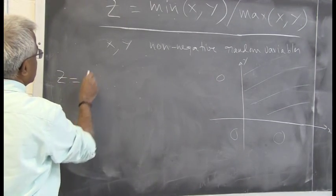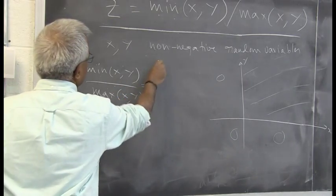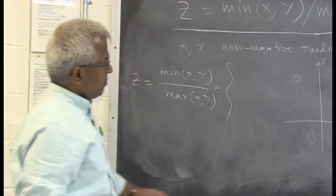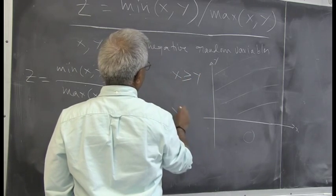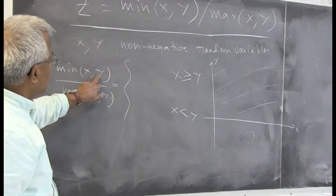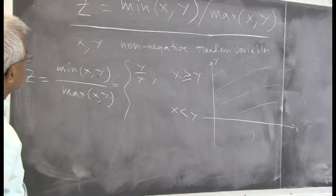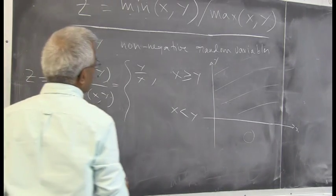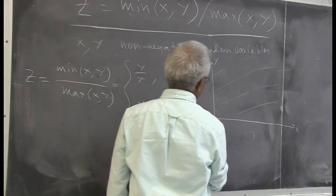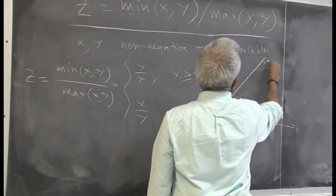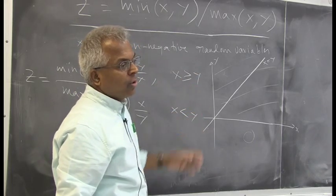Starting with z which is min over max. Whenever we are dealing with min and max, it makes sense to partition the whole region in terms of x greater than y and x less than y. If x is greater than y, minimum will be y and maximum will be x, so z is y over x. Similarly, when x is less than y, minimum over maximum will be x over y. We are partitioning around the line x equal to y. Calling this event A and its complement, A union A-complement is the whole set.